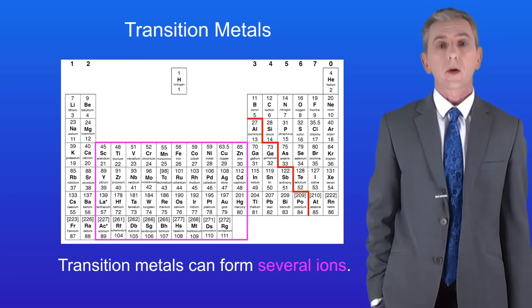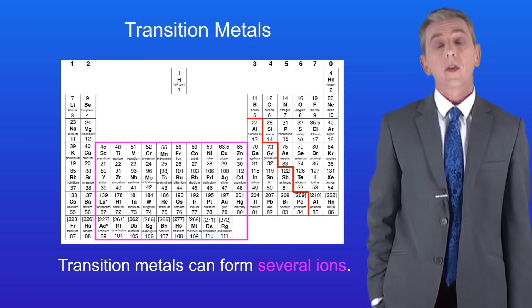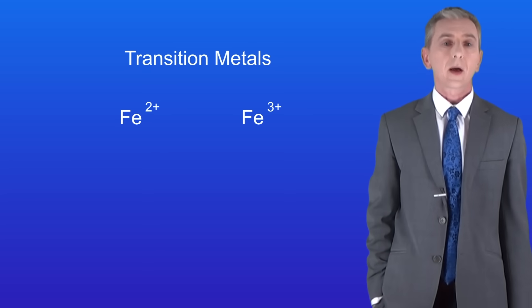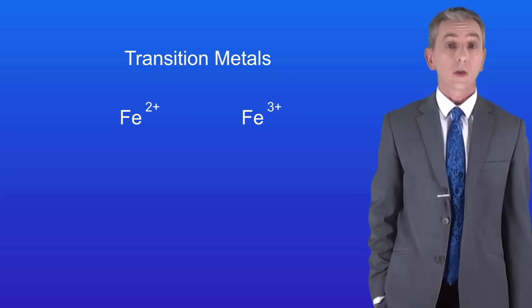Now I should point out that certain metals do not follow this pattern, and a good example are the transition metals. These can form several different ions. A good example of this is iron. This can form a 2+ ion and a 3+ ion.